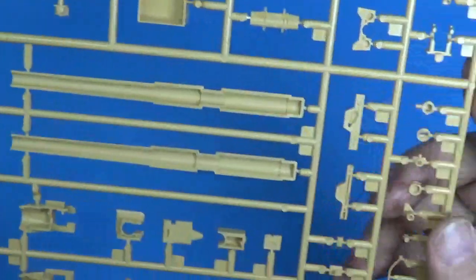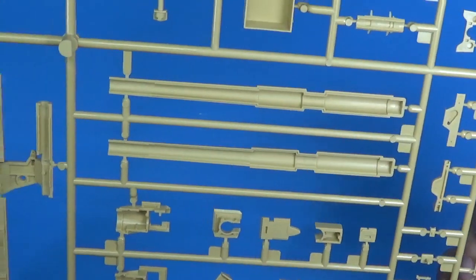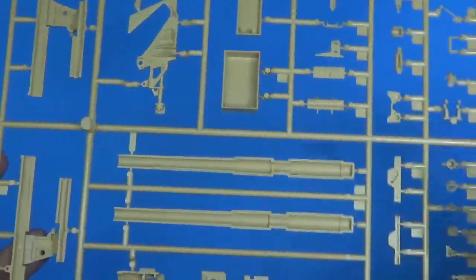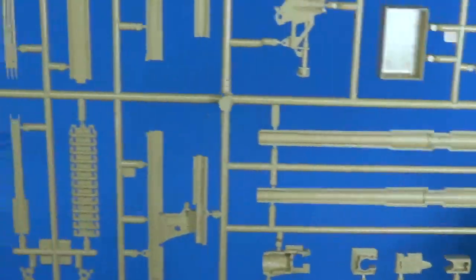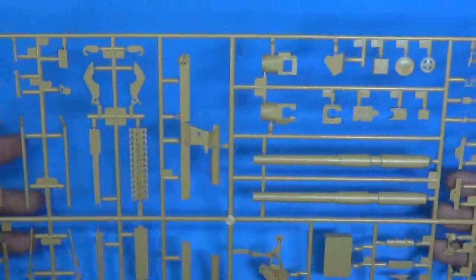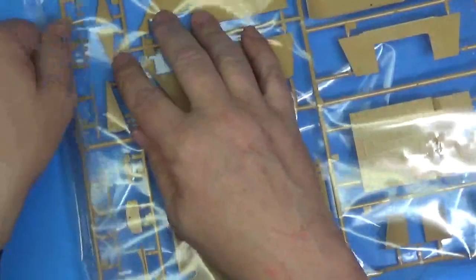Again, your gun barrel right there. You know, it's got guides to put it together and the seam won't be hard to clean up. So the metal barrel is not a requirement. I don't care what anybody tells you. And more of the big important parts. Skirts. Sides.